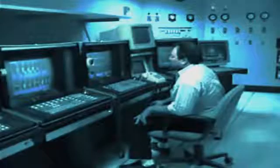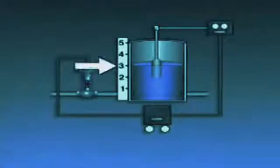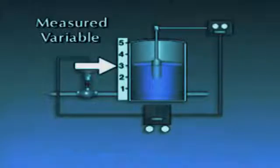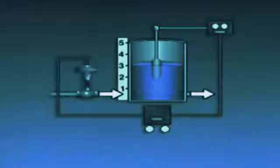To get a better understanding of how an automatic control system works, we'll use this simplified illustration of a system used to control the level of water in a tank. Since the level of the water is what's maintained at a desired value, it can be thought of as the controlled variable in the system. It can also be thought of as the measured variable because the control system uses it as a basis for making operating changes. The water level will remain constant as long as the flow of water into the tank equals the flow of water out of the tank.